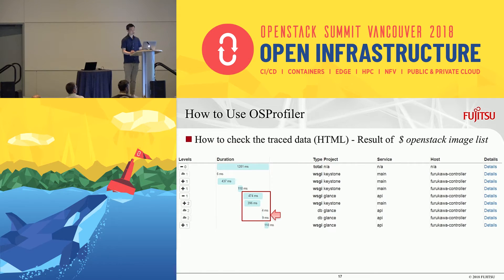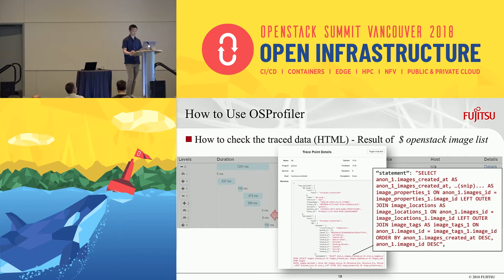With this interface, you can see not only API calling relations but also traces of database operations. Let's click the duration of the database to see more details about database access. You can even see the contents of the SQL. So, again, with OS Profiler you can obtain useful information to identify the root cause of a problem or performance bottleneck and so on.